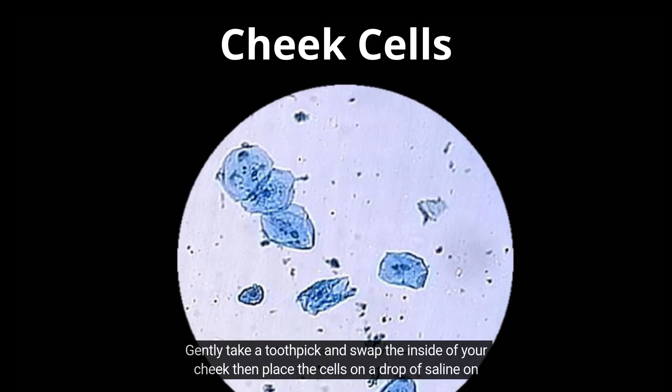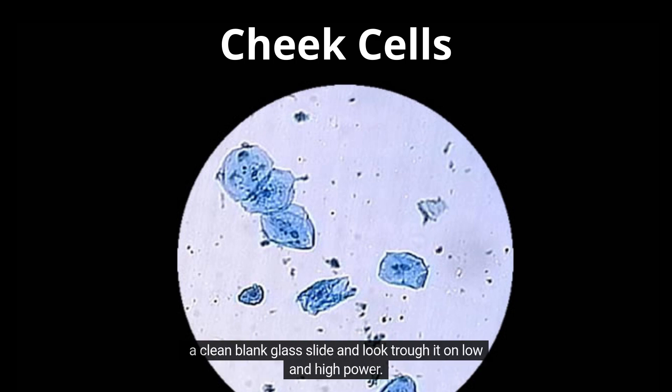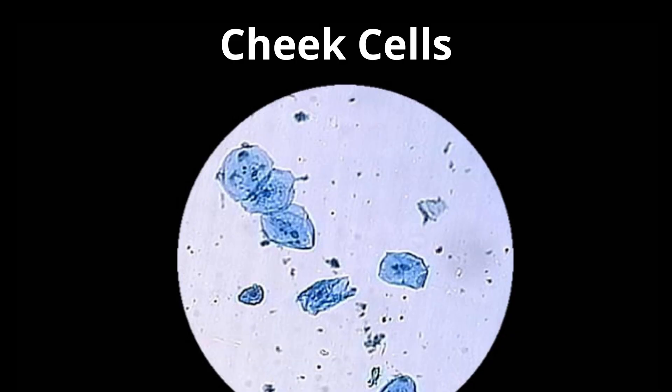Gently take a toothpick and swab the inside of your cheek, then place the cells on a drop of saline on a clean blank glass slide, and look through on low and high power. Draw what you see and label the organelles you see.